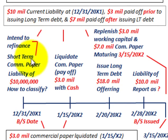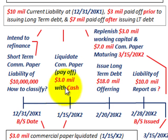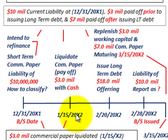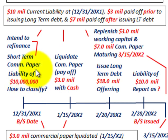We intend to refinance this $10 million current liability after our balance sheet cutoff date. First, before we arrange the new financing, we're going to liquidate — that is, pay off — some of this commercial paper. We determined that we have extra cash on hand: $3 million worth of cash at 12-31-20X1. On 1-15-20X2, after the balance sheet date, we're going to use that $3 million in cash to pay off $3 million of the $10 million current liability in commercial paper.